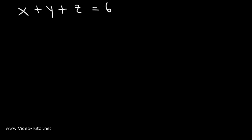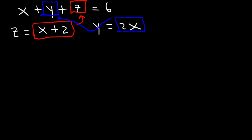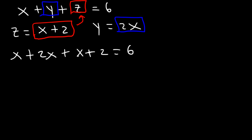Let's try an example with three equations and three variables. Let's say that x plus y plus z is equal to 6, and z is x plus 2, and y is 2x. So let's use the substitution method to find x, y, and z. Notice that we can replace z in the first equation with x plus 2, and we can replace y in the first equation with 2x. So it's going to be x plus 2x plus x plus 2, all equal to 6. x plus 2x plus x is basically 4x.